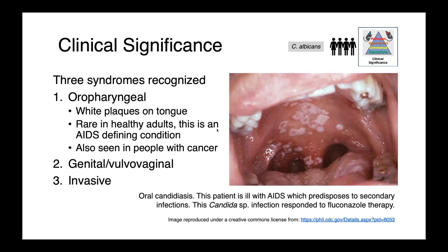In people, three syndromes are associated with Candida infections. First, oropharyngeal candidiasis, where we see white plaques on the tongue and pharynx. This is common in infants and adults with immunosuppressive conditions, though rarely seen in otherwise healthy adults. Oropharyngeal candidiasis is an AIDS-defining condition and is also seen in people being treated for cancer. This particular image from the Centers for Disease Control is of an AIDS patient whose infection was successfully treated with fluconazole therapy.